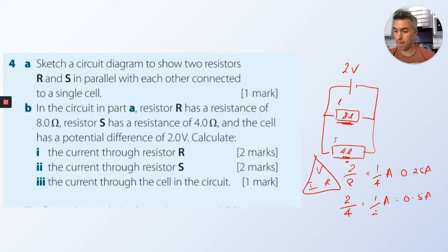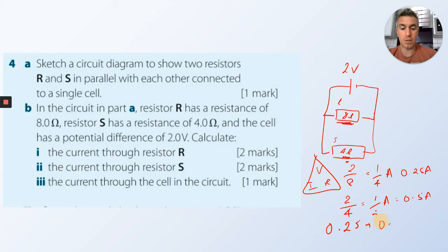The current through the cell in the circuit is just 0.25 plus 0.5 amps.